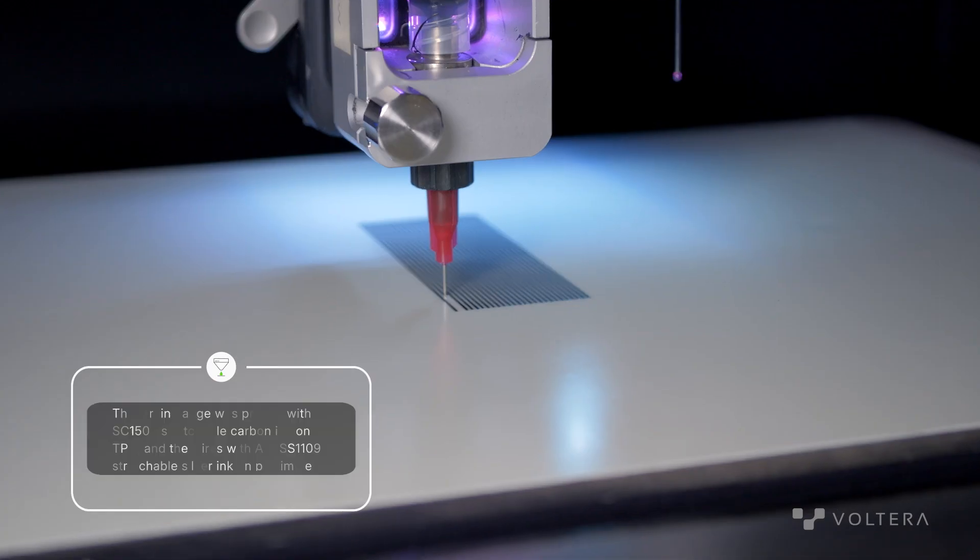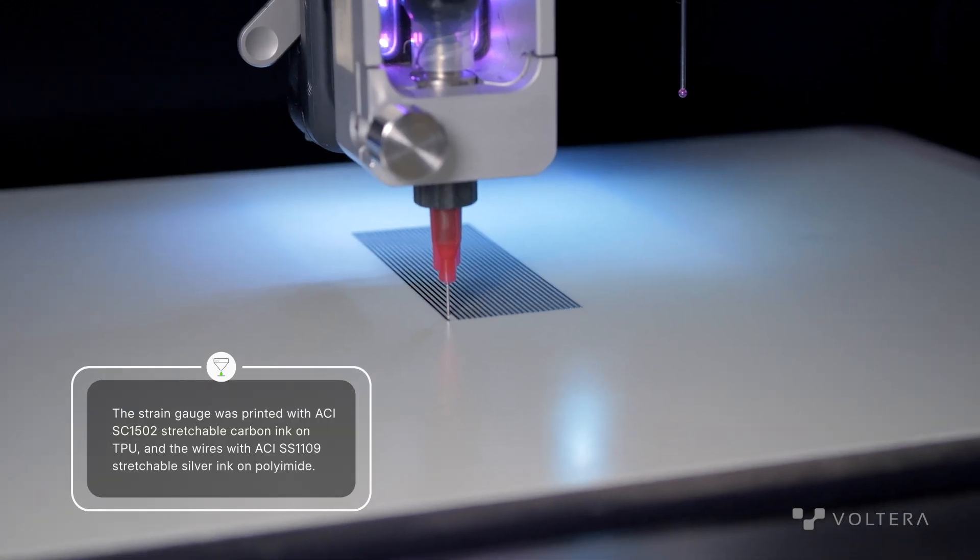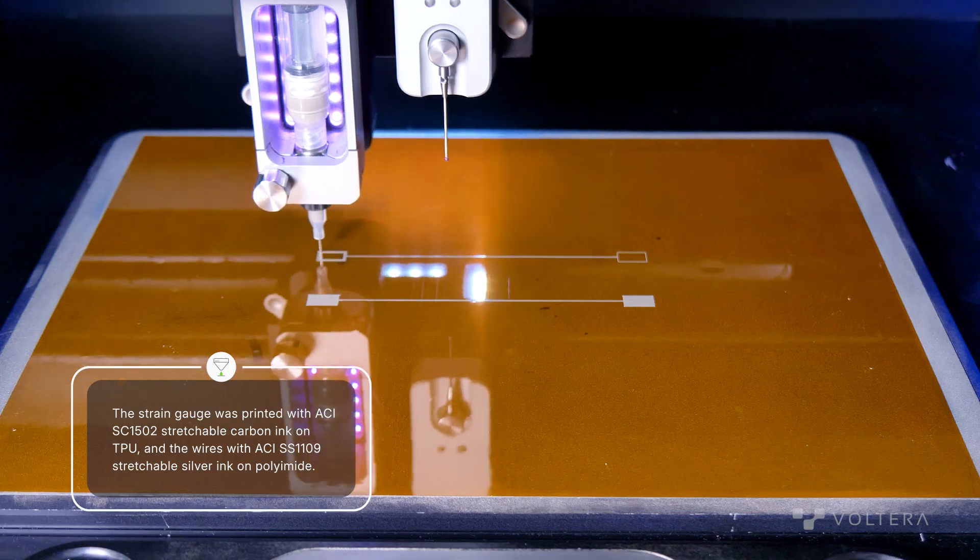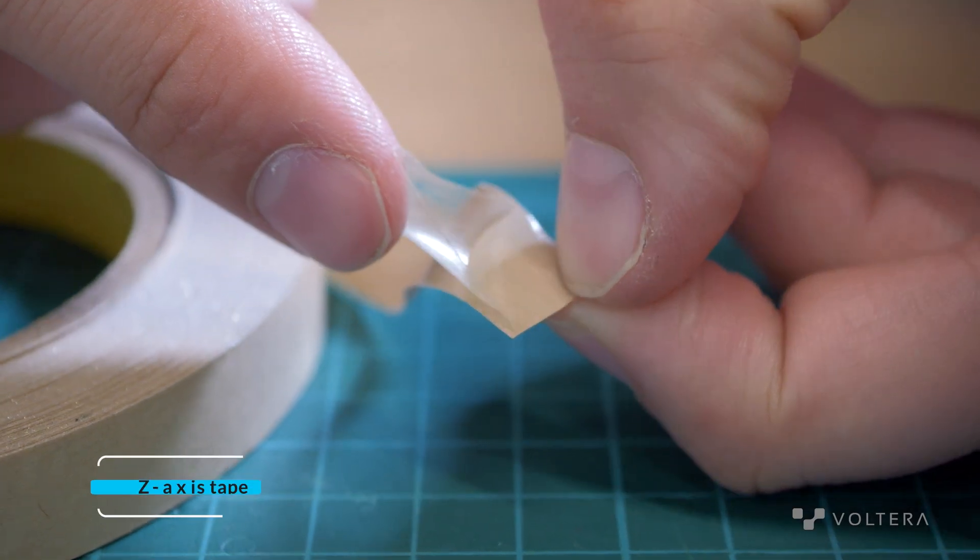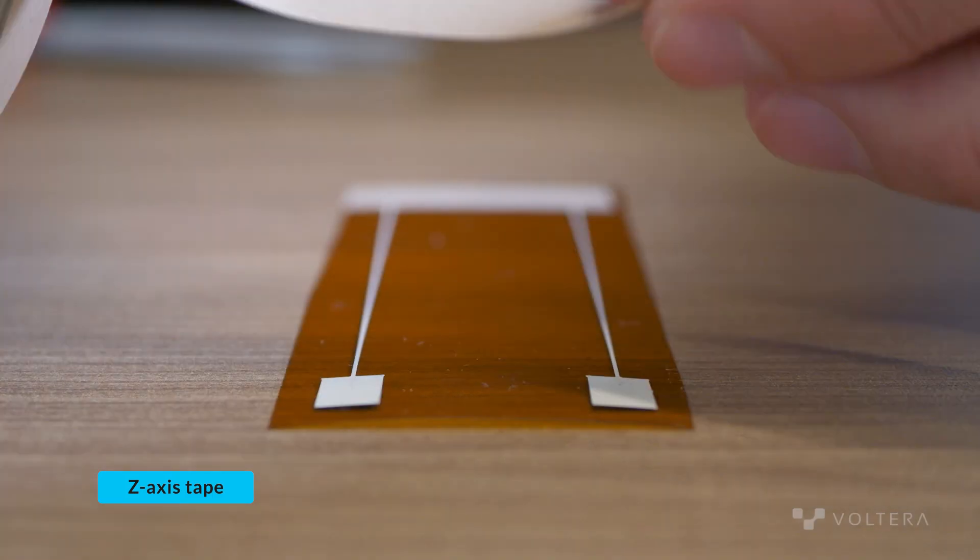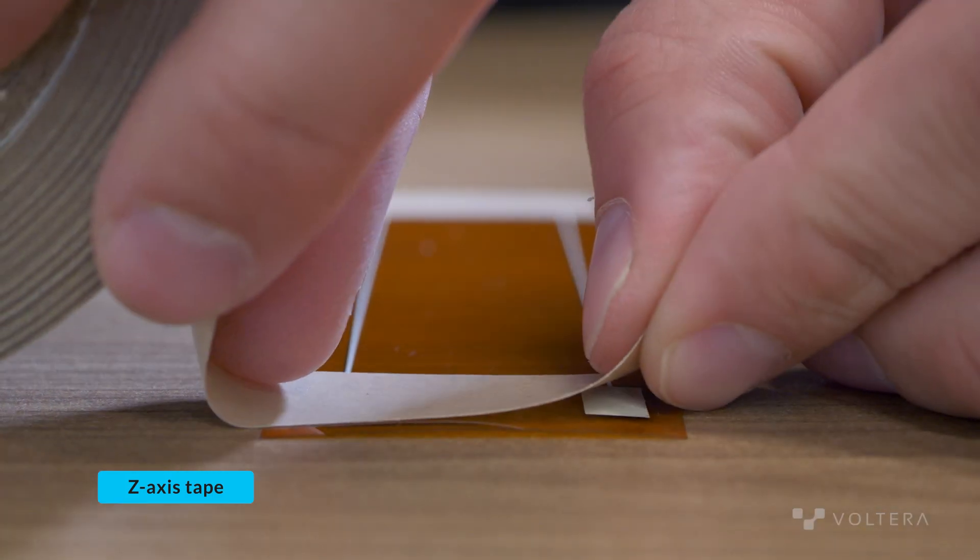Our last print is a strain gauge on TPU. We're going to be connecting this stretchable substrate to a set of flexible wires on polyamide, which will then be connected to a rigid PCB using z-axis tape. Z-axis tape is a double-sided tape that contains silver particles allowing it to create electrical circuit connections.